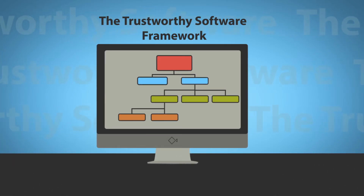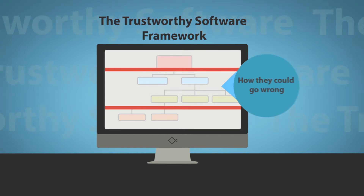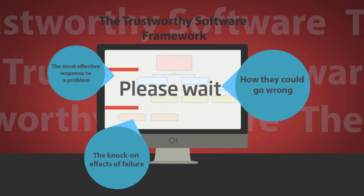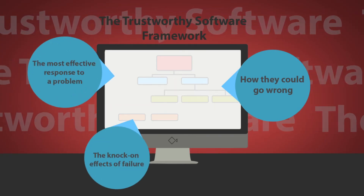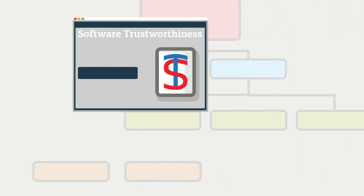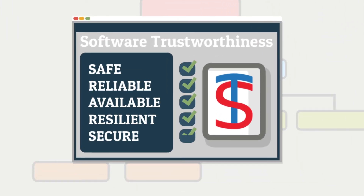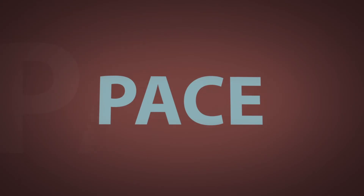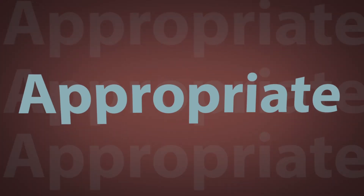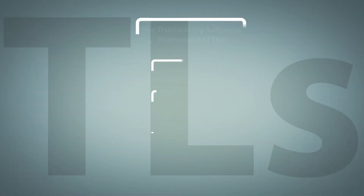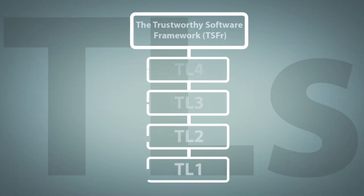The framework structures the software systems in place, how they could go wrong, the knock-on effects of failure, and the most effective response to a problem. For software to be trustworthy, it requires the five facets in appropriate levels. We use the acronym PACE — it stands for measures that are pragmatic, appropriate, and cost effective.